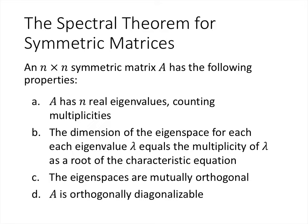Much more is true — symmetric matrices are very special and have all of these properties. A symmetric matrix has all real eigenvalues; an n by n symmetric matrix has n real eigenvalues counting multiplicities. The dimension of each eigenspace equals the multiplicity of that eigenvalue as a root of the characteristic equation. The eigenspaces are mutually orthogonal, and the matrix is orthogonally diagonalizable. These are all very nice properties.